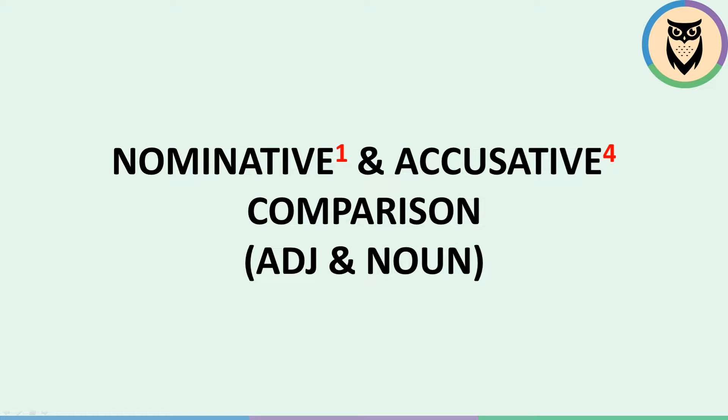Hello everyone! Today we will compare the nominative with the accusative for adjectives and nouns. The nominative and the accusative are what are known as cases. The nominative is the first case and the accusative the fourth case of the Slovene case system, which in total has six cases.